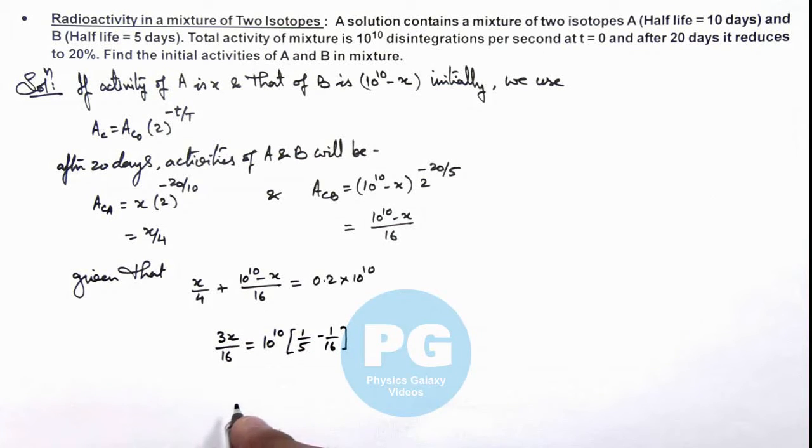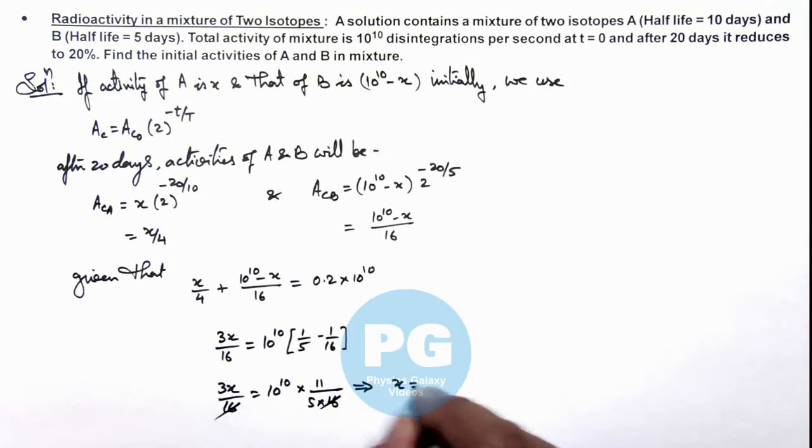And on further simplifying, this gives us 3x by 16 equals 10^10 multiplied by 11 by 5 into 16, where the 16 gets cancelled out. And this will result as the value of x which is 11 by 15 multiplied by 10^10 disintegrations per second, which is approximately 0.73 times 10^10 disintegrations per second.